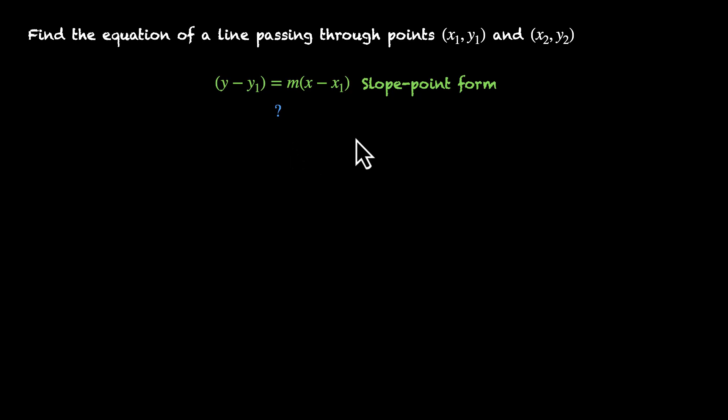Now let's generalize this. Find the equation of a line passing through the points (x1, y1) and (x2, y2). Let's do exactly what we just did for these two points. So the slope point form says this. And we need to figure out the two point form. We'll do this in two parts. First we'll find the slope. And then we'll use the slope point form.